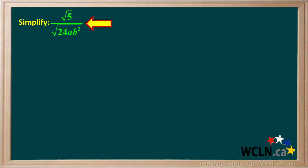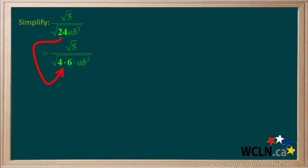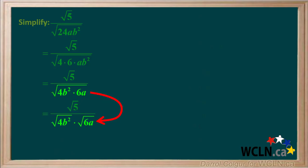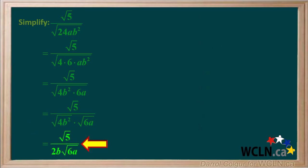We can also rationalize the denominator in expressions containing variables. We're asked to simplify the square root of 5 over the square root of 24ab squared, assuming a and b are both greater than 0 — we can't have zero in the denominator and can't take the square root of a negative number. We factor 24 as 4 times 6, rearranging the radical so the perfect squares 4 and b squared are grouped together, and split into the square root of 4b squared times the square root of 6a. The square root of 4b squared is 2b.